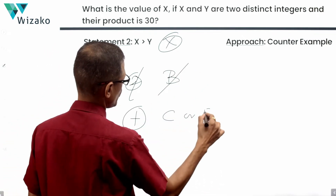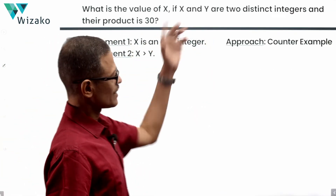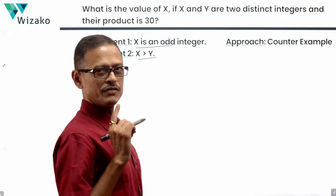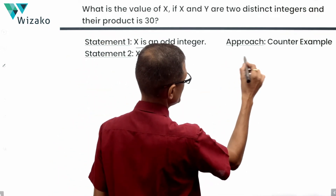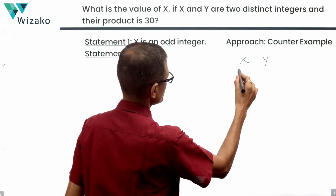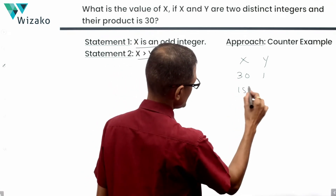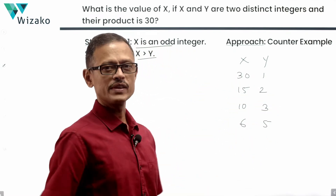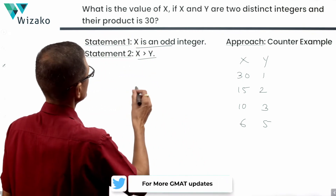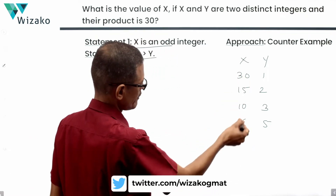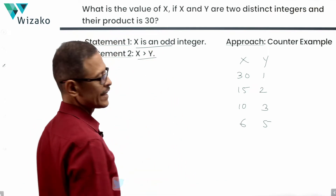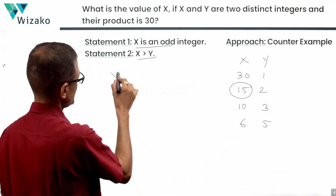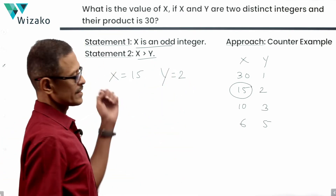Combining the statements — there's a clue that probably more than one value works. First, let's list all the ways to express 30 as a product of two integers: 30×1, 15×2, 10×3, and 5×6 (since 4 does not divide 30). We want x > y, so x takes the larger value in each pair. We also want x to be an odd integer. It appears x = 15 and y = 2 satisfies all these conditions.